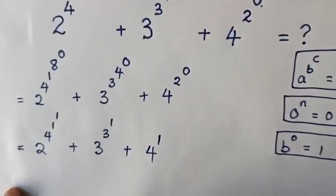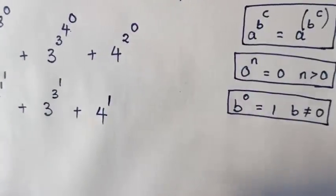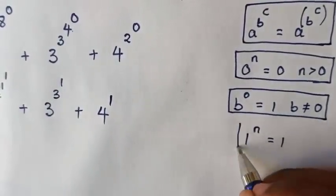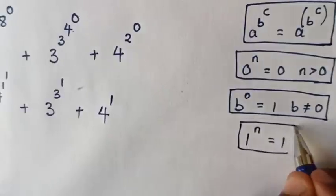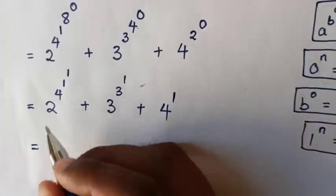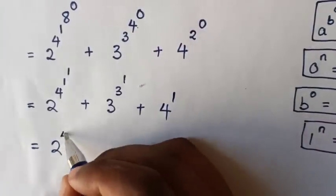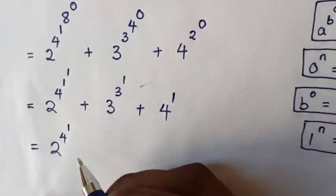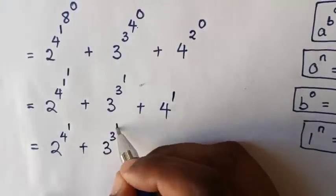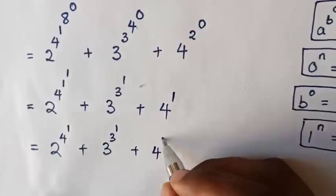In our exponents, from here 1 power of 1, we will apply this rule: 1 power of n is equal to 1. Then in our exponents it will be equal to 2 power of 4 then 1 power of 1 is 1, plus 3 power of 3 power of 1, plus 4 power of 1.